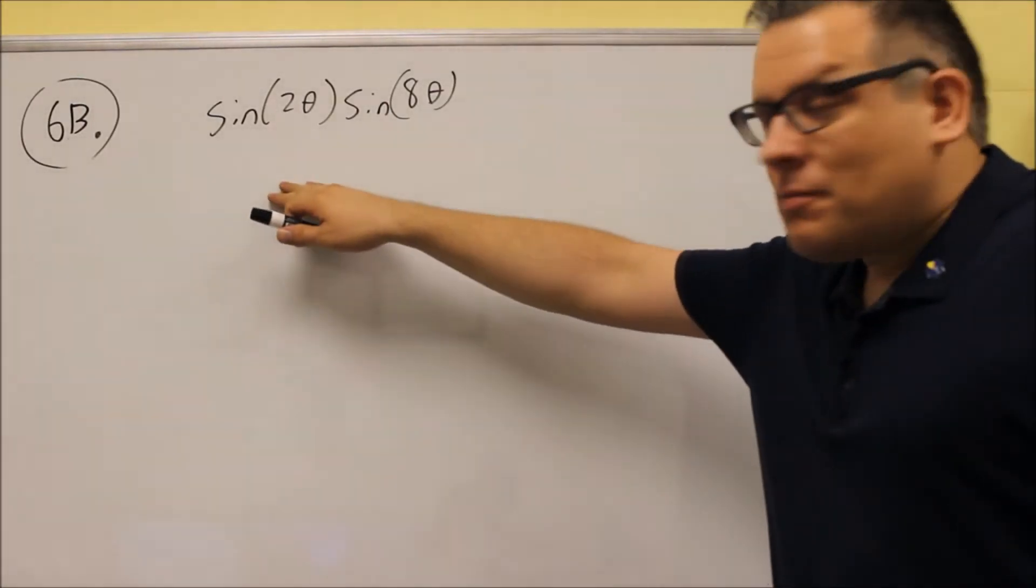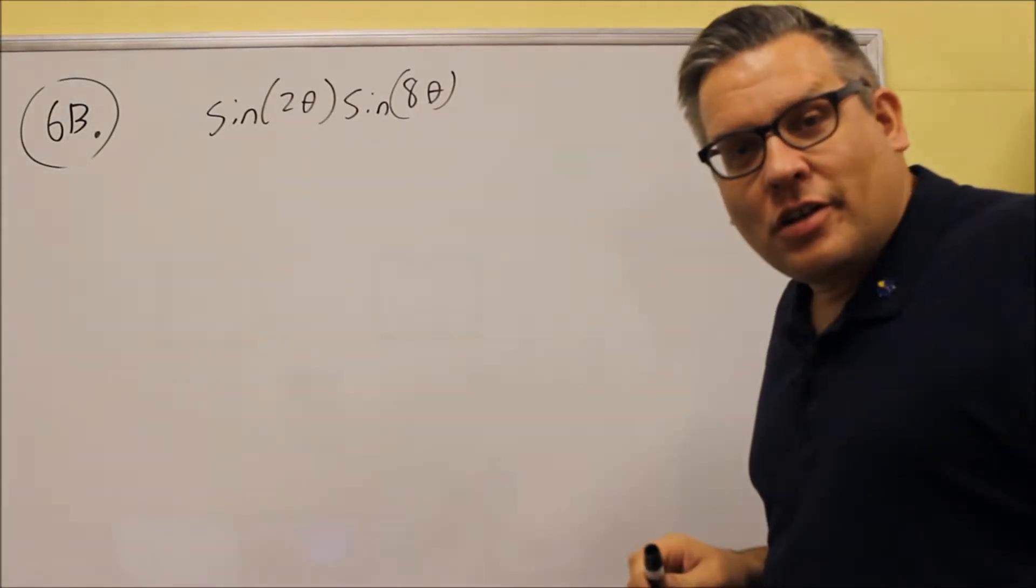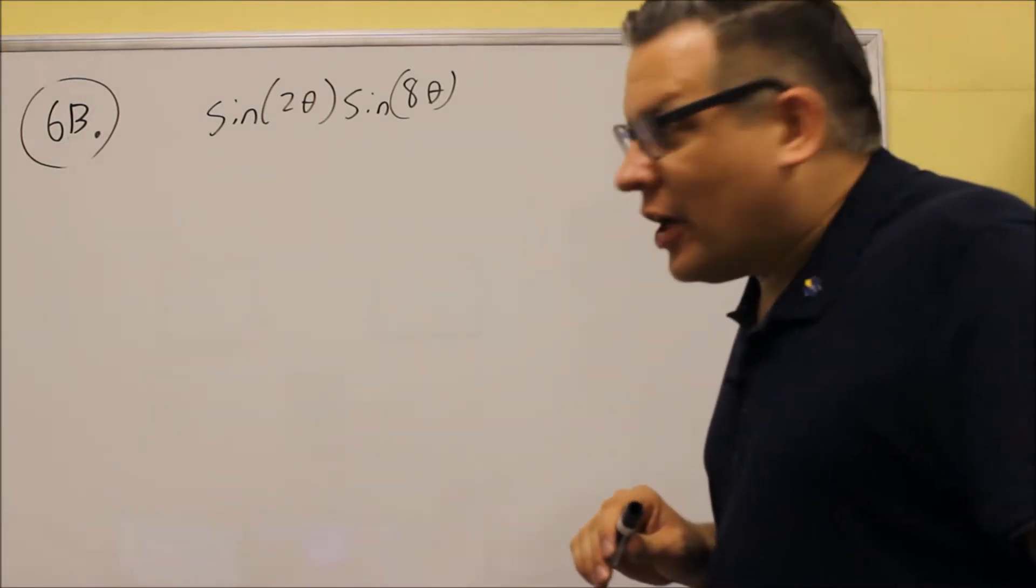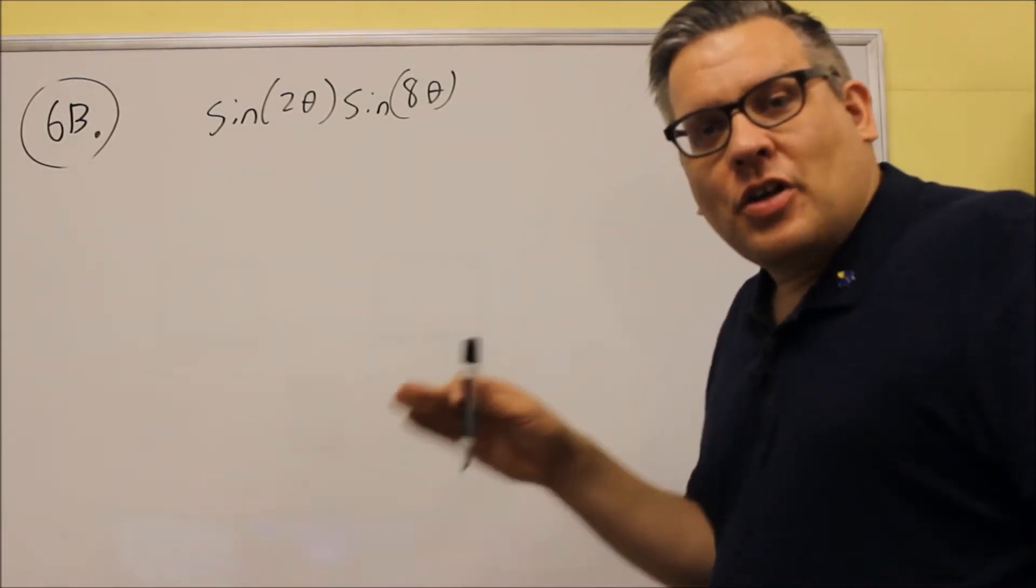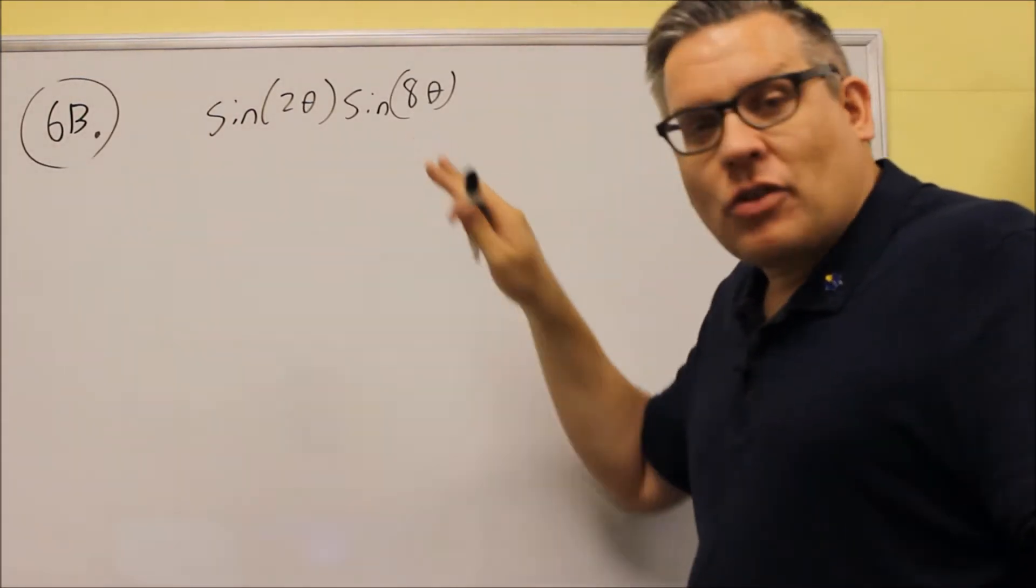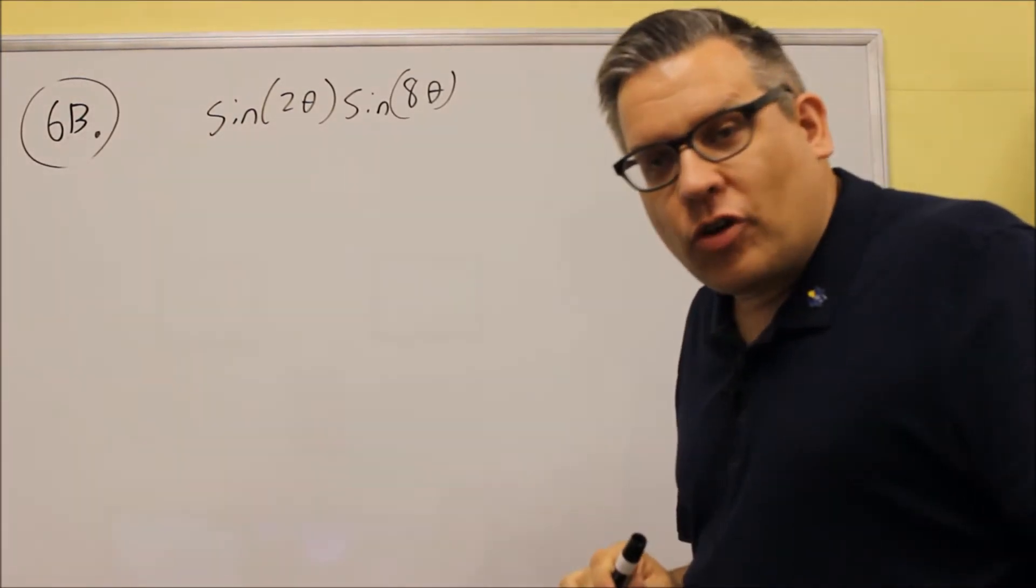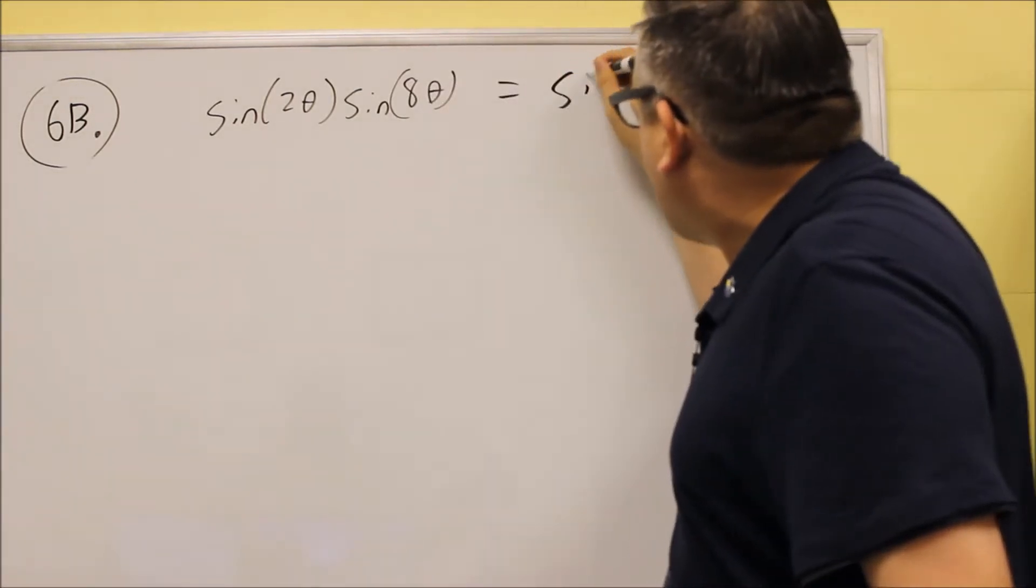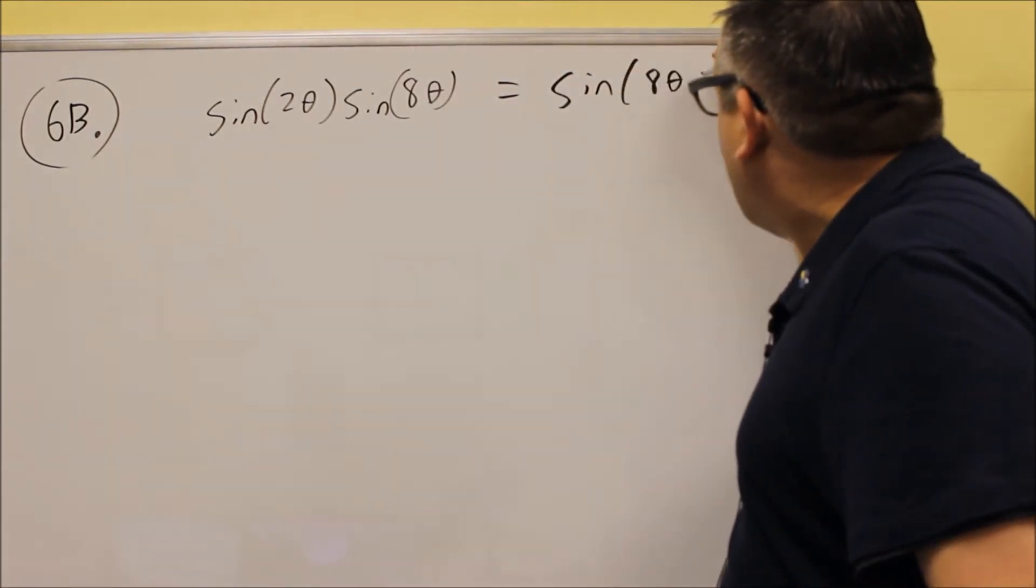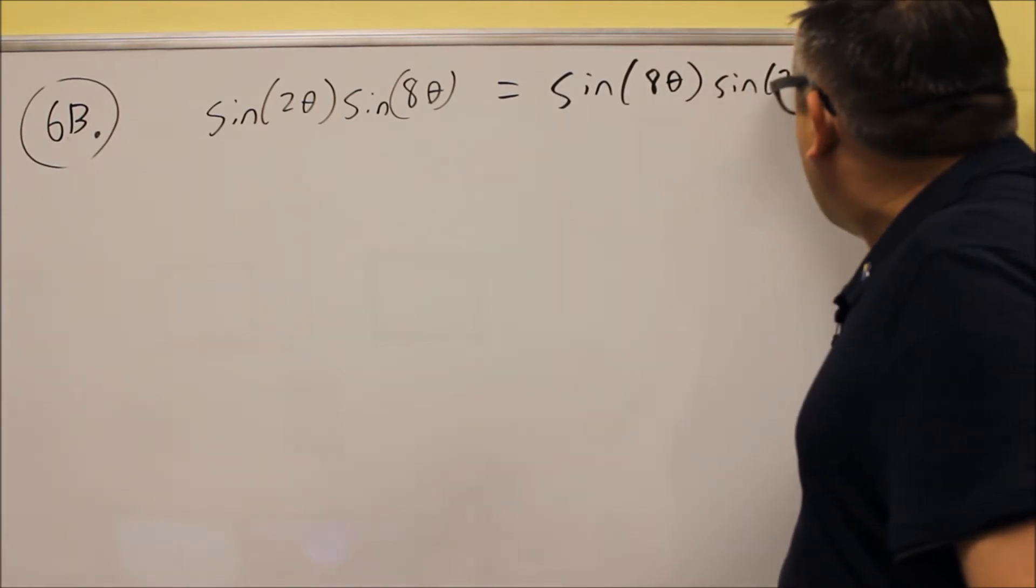Okay, for 6b, we have sine and sine. Now the formula that we're going to use for that involves taking x minus y, and so it's always better if you have the bigger one first. Now in this case, I want to switch the order around. This is exactly the same thing as sine 8 theta, sine 2 theta. So I'm just going to change that into this.